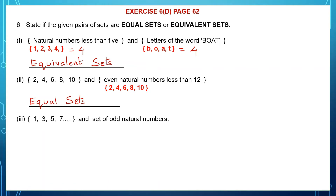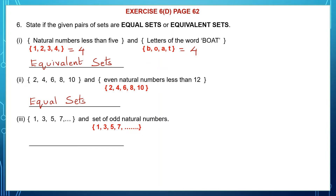Third one: the first set has elements 1, 3, 5, 7 and so on, and the second set is the set of odd natural numbers. Odd natural numbers are 1, 3, 5, 7 and so on. Look at the first set and the second set — they have the same elements, so these are also equal sets.